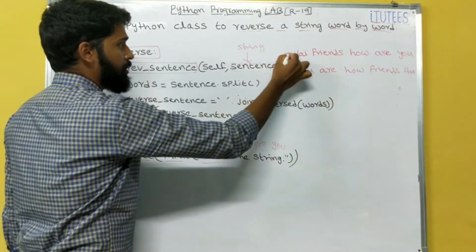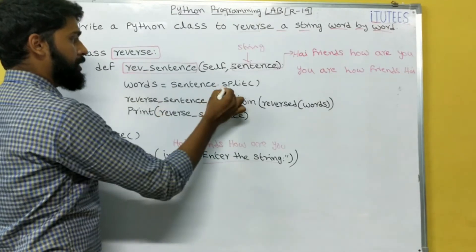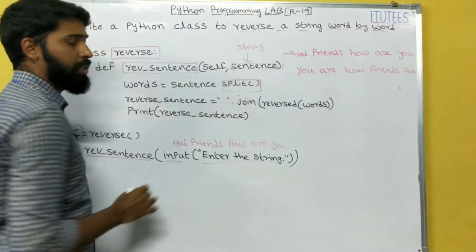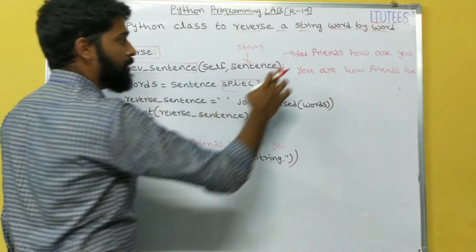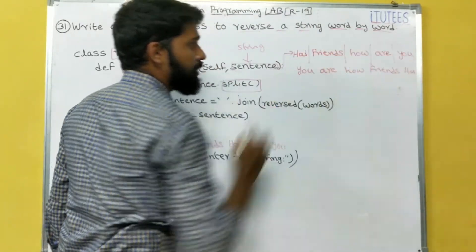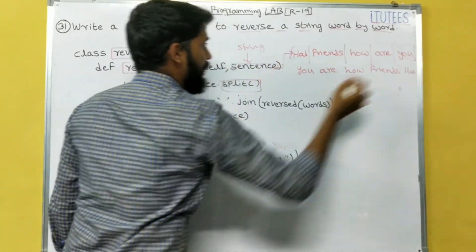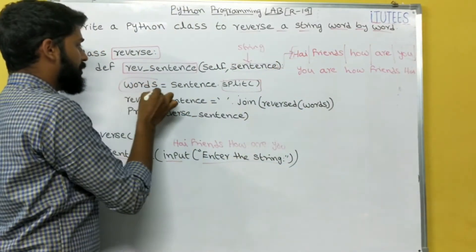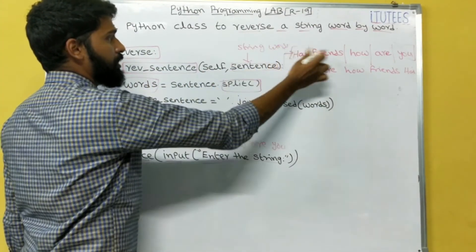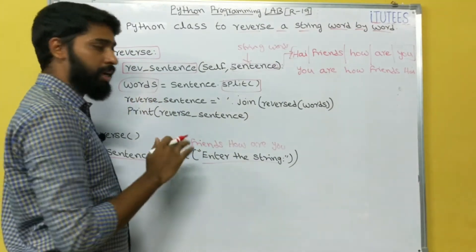So sentence equals to 'hi friends how are you'. Now sentence dot split — the split method is used to split the words whenever a space is encountered. All the words are stored in a list, and the list name is 'words'.